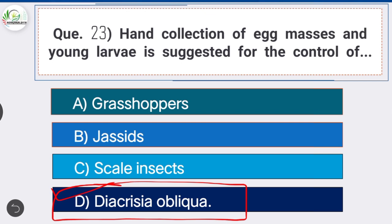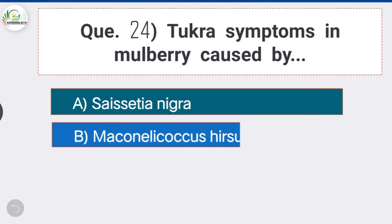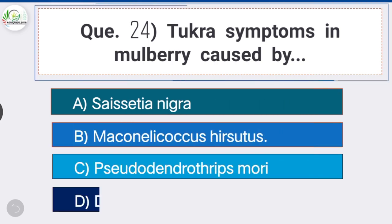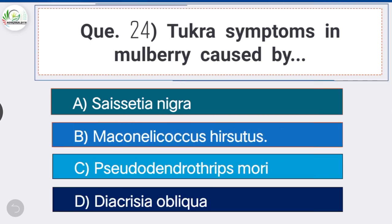Question number twenty-four: tukra symptoms in mulberry are caused by — option B is the correct answer — Maconellicoccus hirsutus. Tukra disease is caused by the mealybug Maconellicoccus hirsutus and is considered the most serious pest of mulberry. The pest sucks sap from tender leaves and shoots, resulting in malformation of the apical shoot.